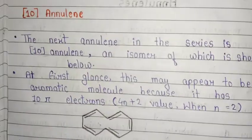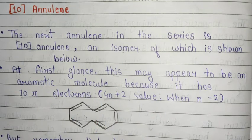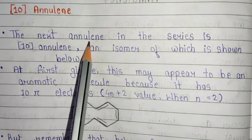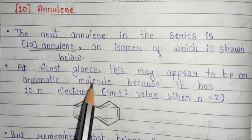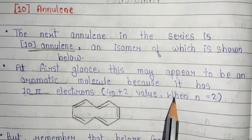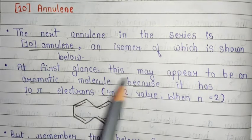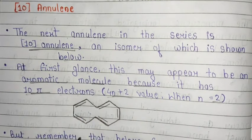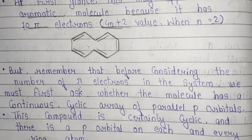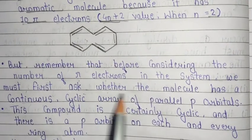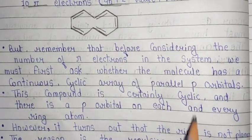Now some important points about annulins: [10]annulene is very important because it has some important concepts. The next annulin in the series is [10]annulene, isomers of which are shown below. At first glance this may appear to be an aromatic molecule because it has 10 pi electrons, satisfying the 4n+2 rule when n equals 2. So it may appear to be an aromatic molecule because it follows Hückel's rule — but remember that before counting pi electrons, we must first ask whether the molecule has a continuous cyclic array of parallel p orbitals.